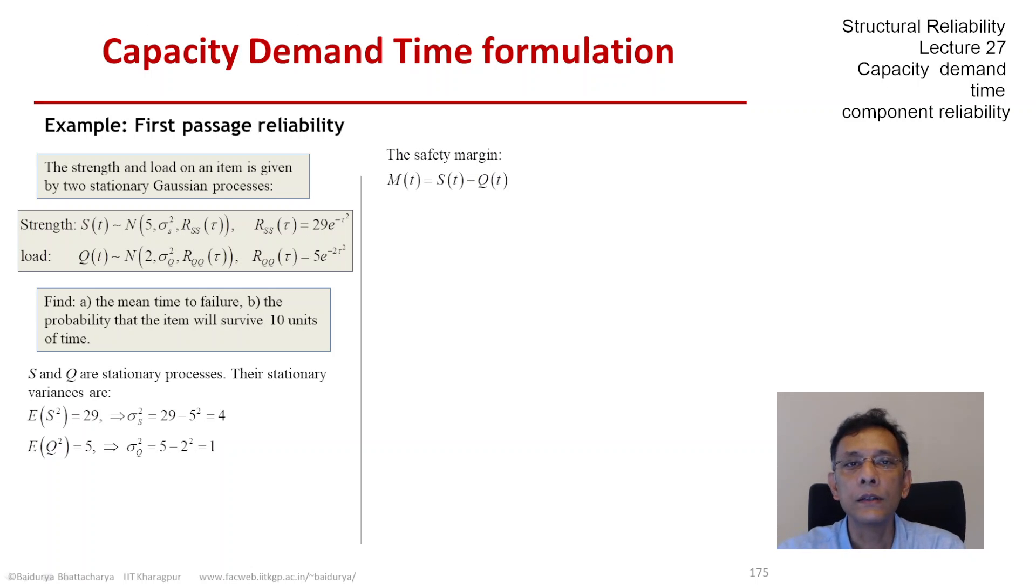Now the safety margin is the difference of S and Q. Because each of these quantities S and Q are stationary Gaussian, the difference is Gaussian and also stationary.